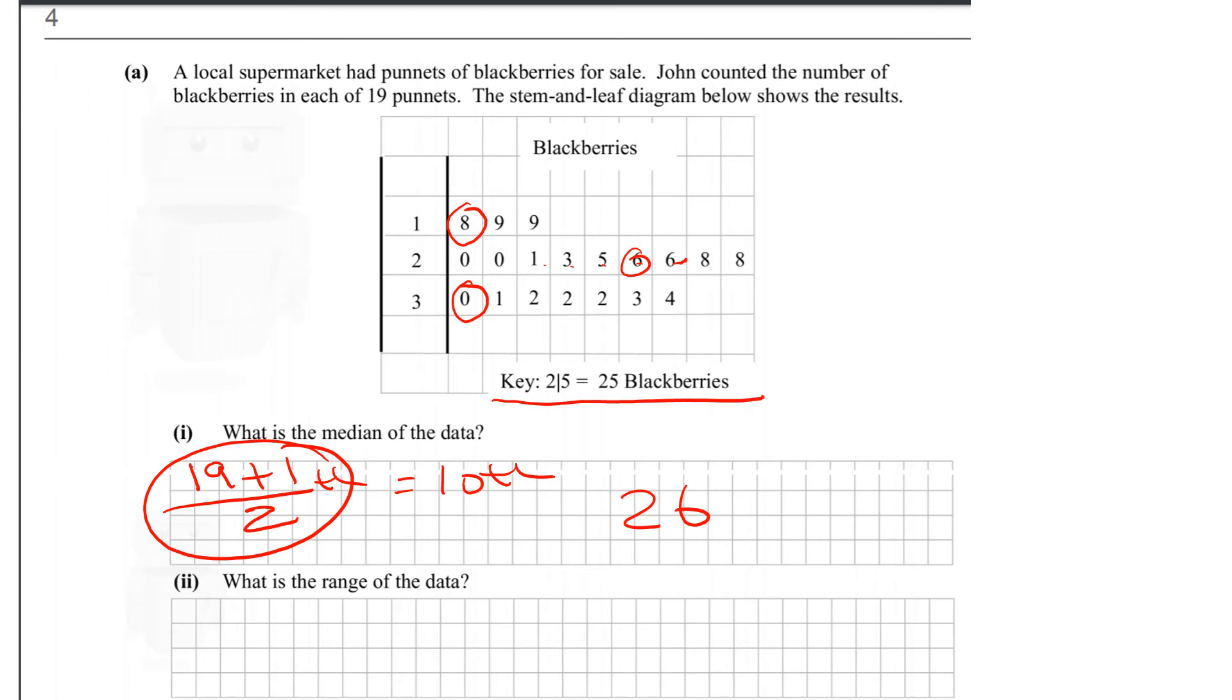What is the range of the data? The range, again, is the difference between the highest number and the lowest number, which in this case is 34 is the highest and the lowest is 18. So it's 34 minus 18, which equals 16.